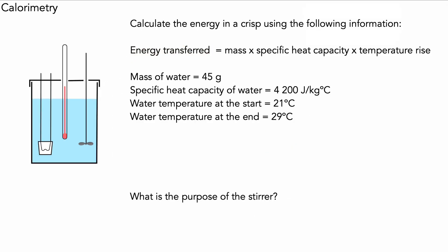Let's look at a slightly trickier question. We're using a crisp this time with a mass of water as 45 grams. This must be converted into kilograms, so we divide by a thousand. That gives us 0.045 kg. They haven't given us the temperature rise but have given us the end and start temperatures. So the temperature rise would be 29 minus 21, which is 8 degrees C.